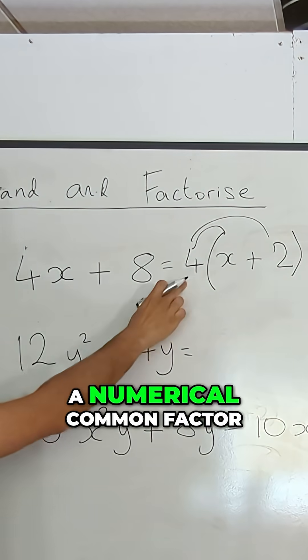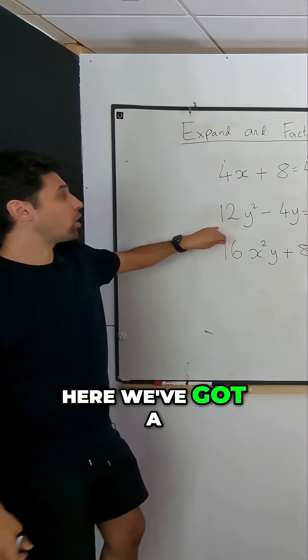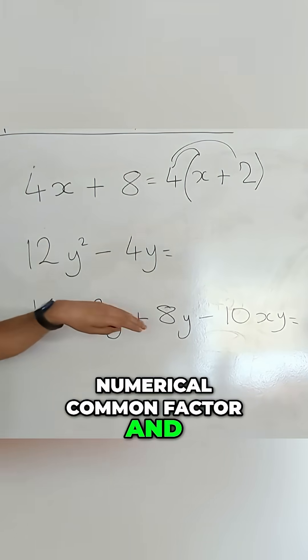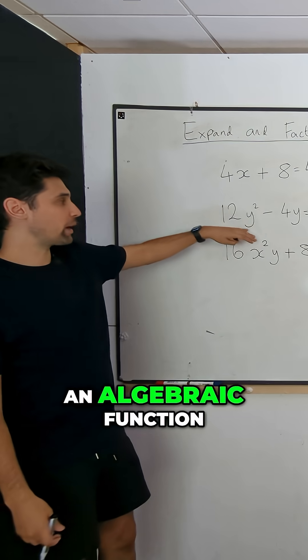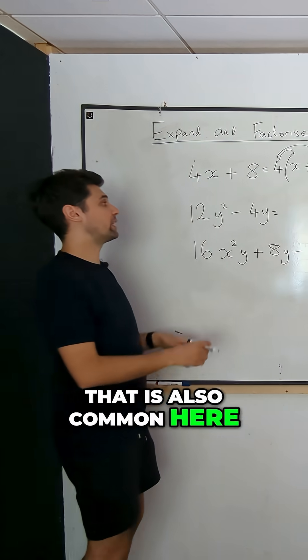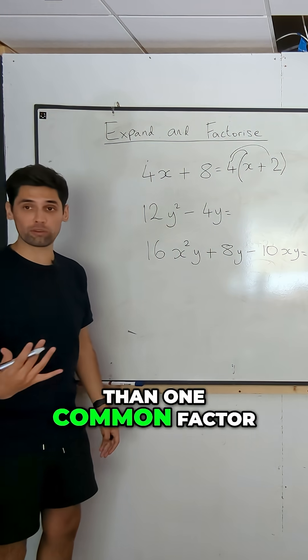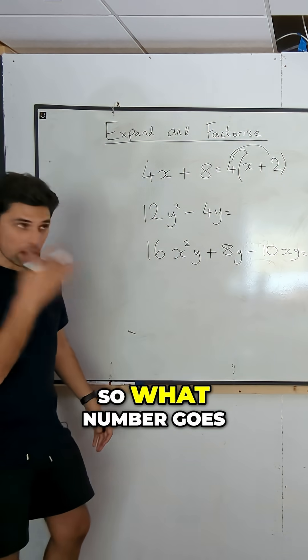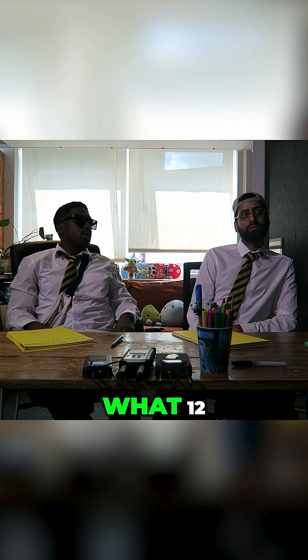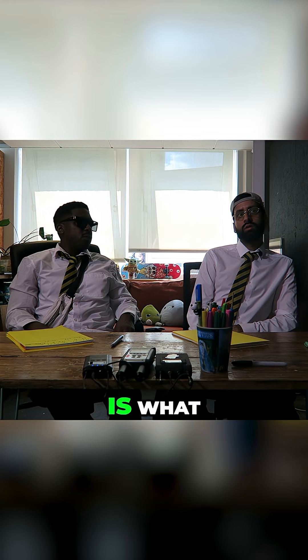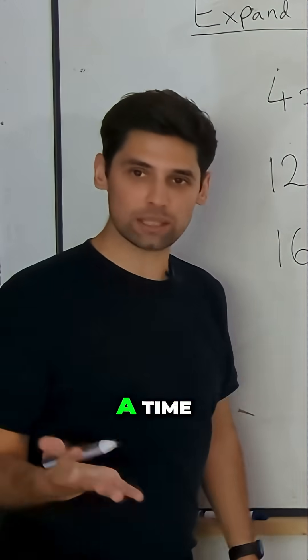That's when we have a numerical common factor. Here we've got a numerical and a letter, that is an algebraic function that is also common here. So there's going to be very often more than one common factor, but we do one at a time. So what number goes into both of these? 12, 4. 4 divided by 12... divided by 4 is what? Yeah, three. Three. One step at a time, please.